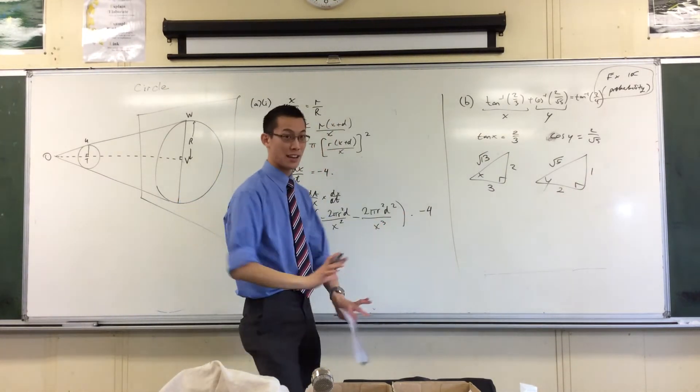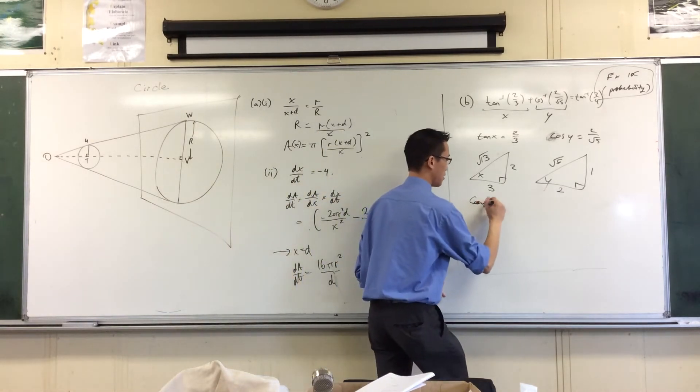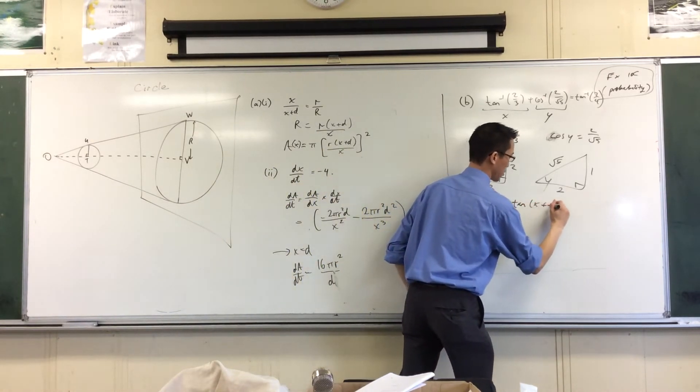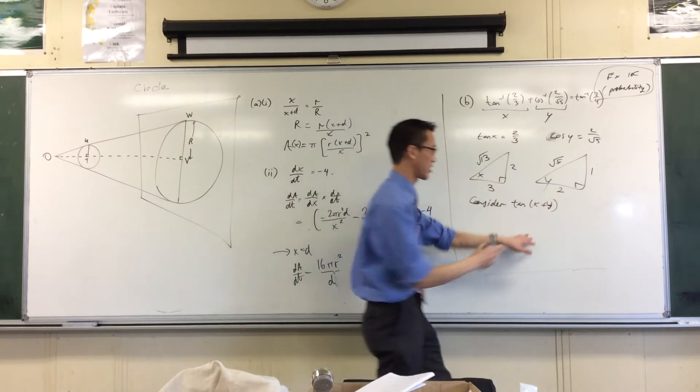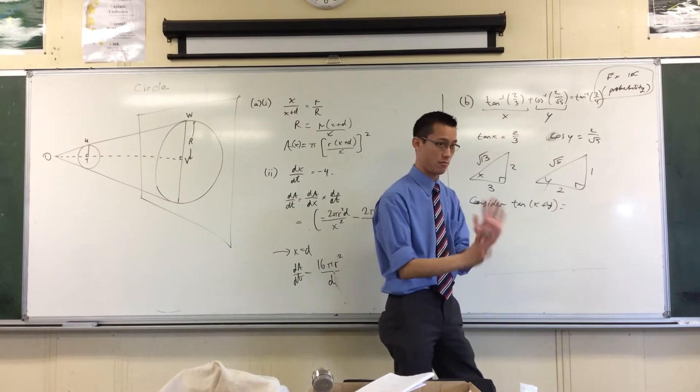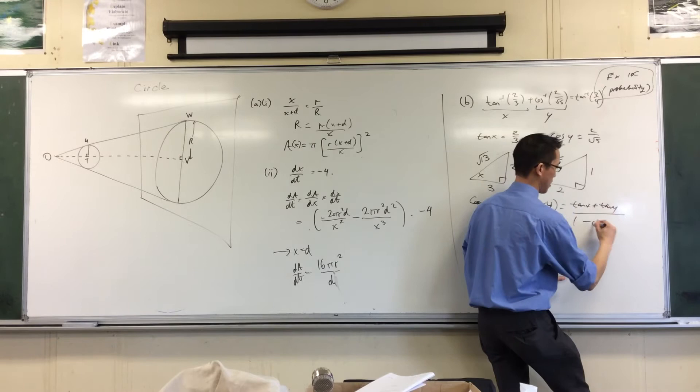So now you can consider, this is your starting point, now you can say consider tan of x plus y, tan of x plus y. Because they're angles you can just consider this as the expansion, really really easy. So this would be tan x plus tan y over 1 minus...